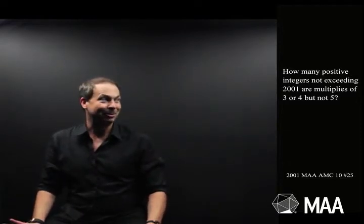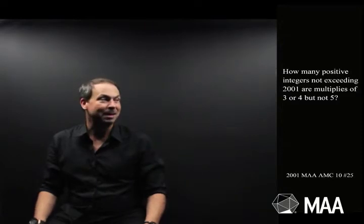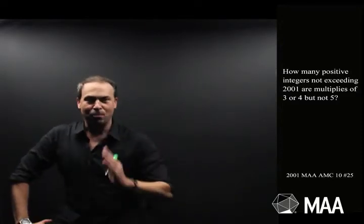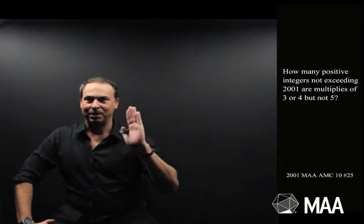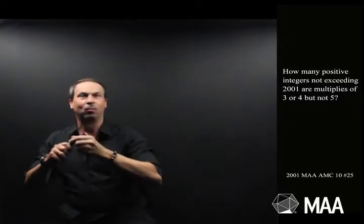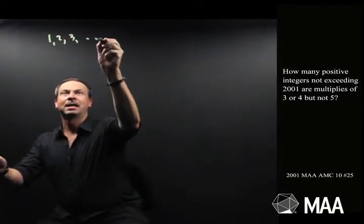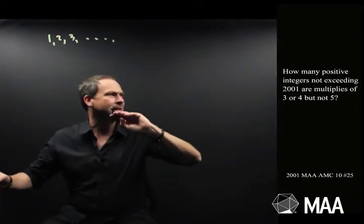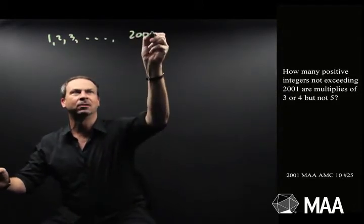Okay, so I guess this was given in the year 2001, since the number's mentioned. Fine. But I'm looking for the multiples of 3 and 4, but not multiples of 5, from the numbers 1, 2, 3, up to, so it says not exceeding 2001, so I guess it goes all up to 2001.